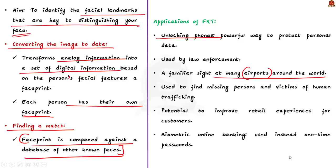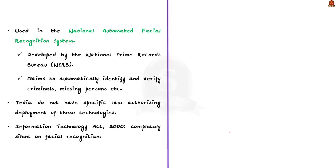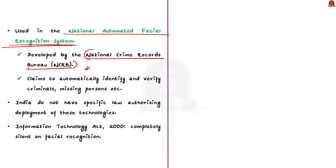Additionally, facial recognition has the potential to improve retail experiences — kiosks in stores could recognise customers and make product suggestions based on purchase history. Biometric online banking is another benefit, allowing customers to authorise transactions by looking at their smartphones instead of using one-time passwords. In India, this technology is used in the National Automated Facial Recognition System, being developed by the National Crime Records Bureau, which claims to automatically identify and verify criminals, missing persons, etc. Currently, India does not have a specific law authorising deployment of these technologies, and the Indian Information Technology Act of 2000 is completely silent on facial recognition.